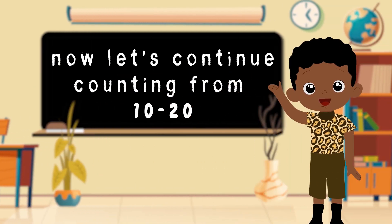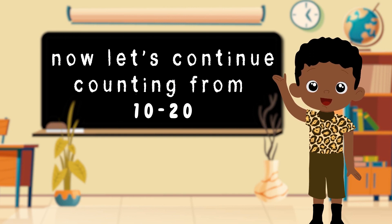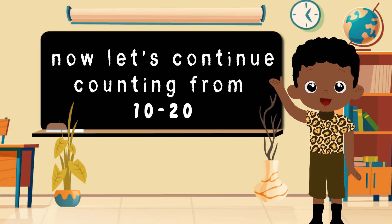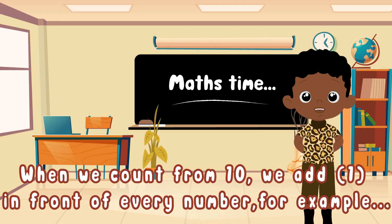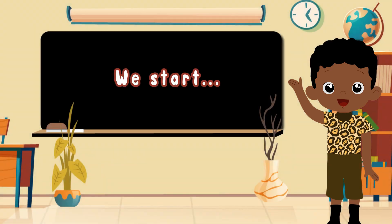Now let's continue counting from 10 to 20. When we count from 10, we add 1 in front of every number. For example, we start: